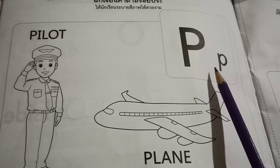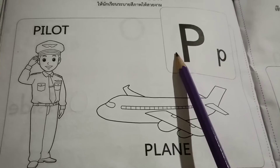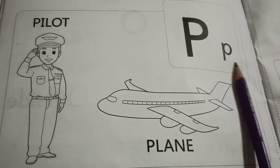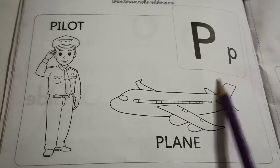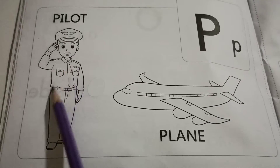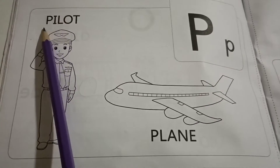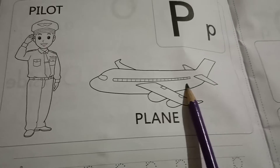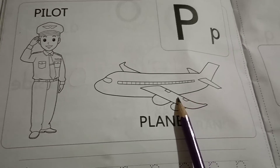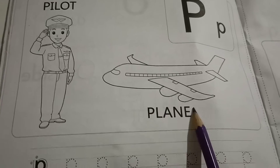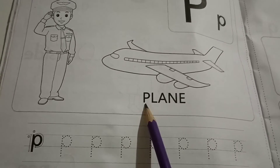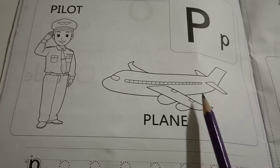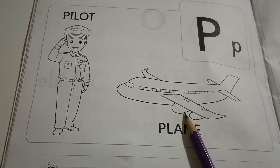You can see the capital P and the small P. This is the capital P and this is the small P. You can see a pilot — we start with the letter P: pilot. And you can see a plane — we start with the letter P: plane.